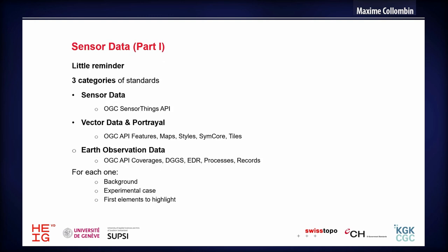To summarize what follows: we opted for three categories of standards — sensor data, vector, and Earth observation. For each of these groups, I will explain the background, the experimental cases, and the first elements to highlight.